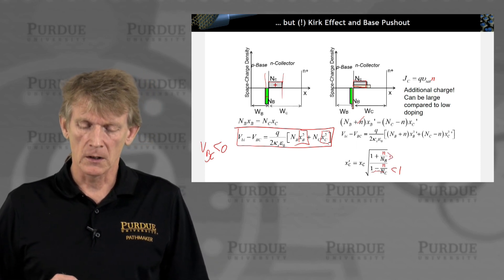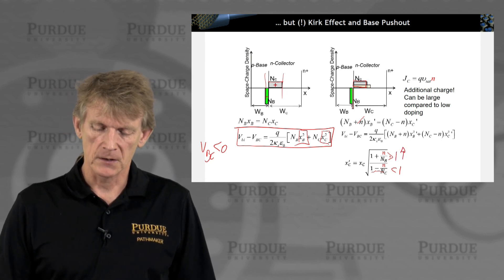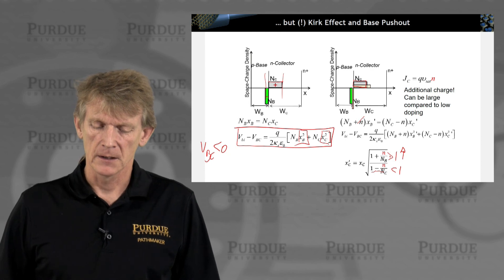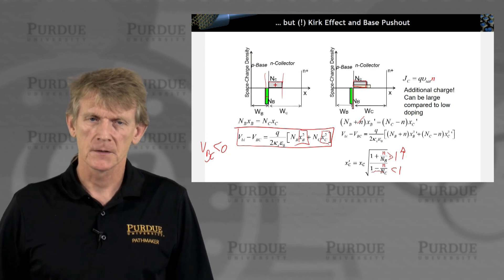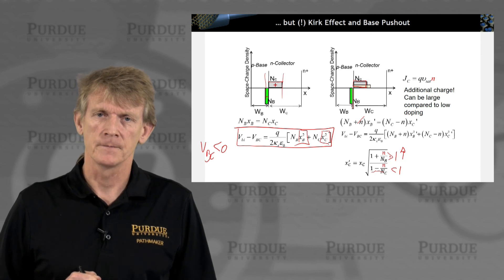And this is getting larger. So overall, so this is definitely larger than 1 and growing, and this is less than 1 and decreasing. So X prime C is getting larger, so you're increasing it further.